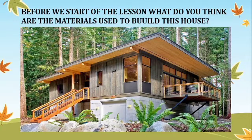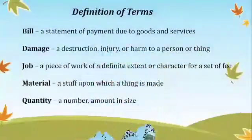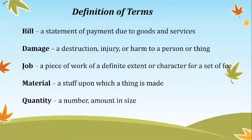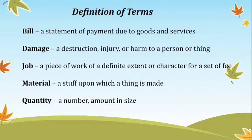The lesson: what do you think are the materials used to build this house? Definition of terms: Bill — a statement of payment due for goods and services. Damage — destruction, injury, or harm to a person or thing. Job — a piece of work of a definite extent or character. Material — a stock upon which a thing is made.